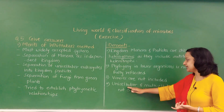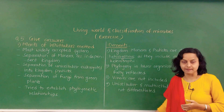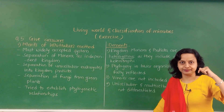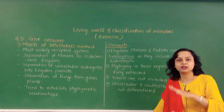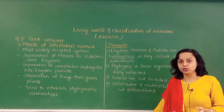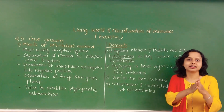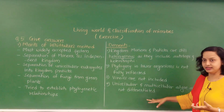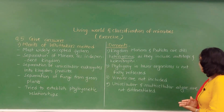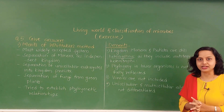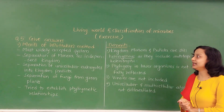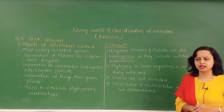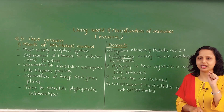And the last drawback: unicellular and multicellular algae are not differentiated. As we discussed in the earlier lecture, some algae that are unicellular are placed in Kingdom Monera, and some algae that are multicellular are placed in Kingdom Plantae via Kingdom Protista. So there is no proper differentiation done — unicellular algae were put in Kingdom Monera, multicellular algae were placed in Kingdom Plantae. This differentiation was not done properly.